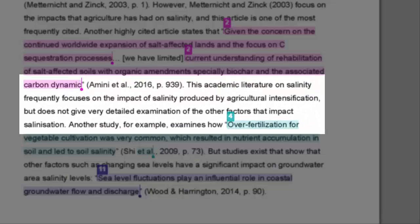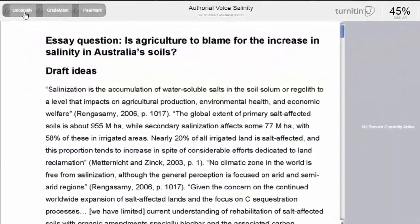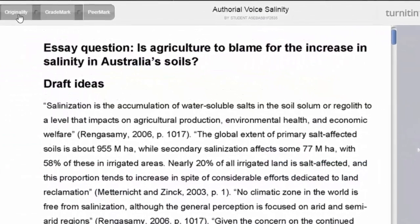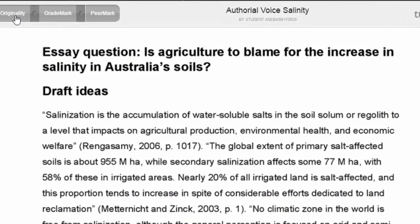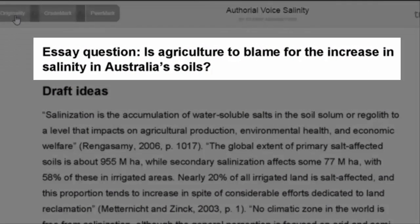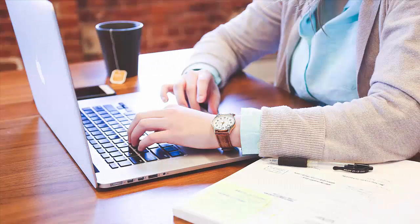This academic literature on salinity frequently focuses on the impact of salinity produced by agricultural intensification, but does not give very detailed examination of the other factors that impact salinization. This idea is starting to answer the question, since the student is implying that agriculture is not the only reason for the increase in salinity in Australia's soil. If the student adapted this sentence as their topic sentence, this would make the purpose of the paragraph much clearer.